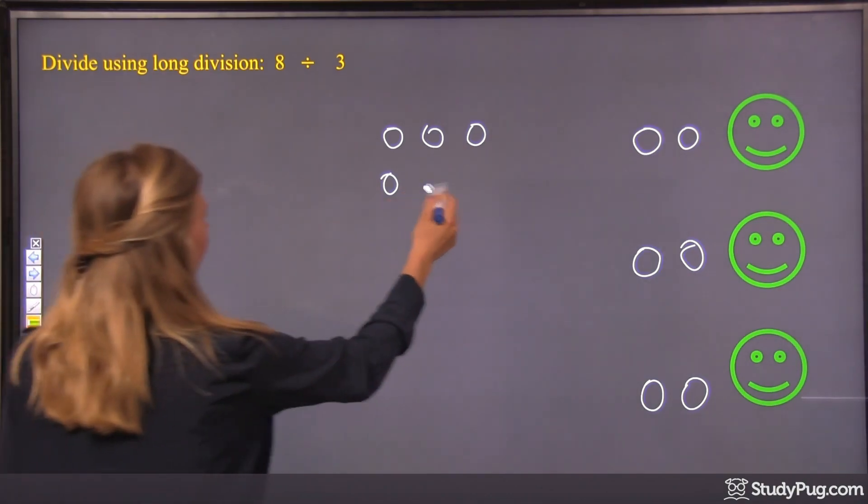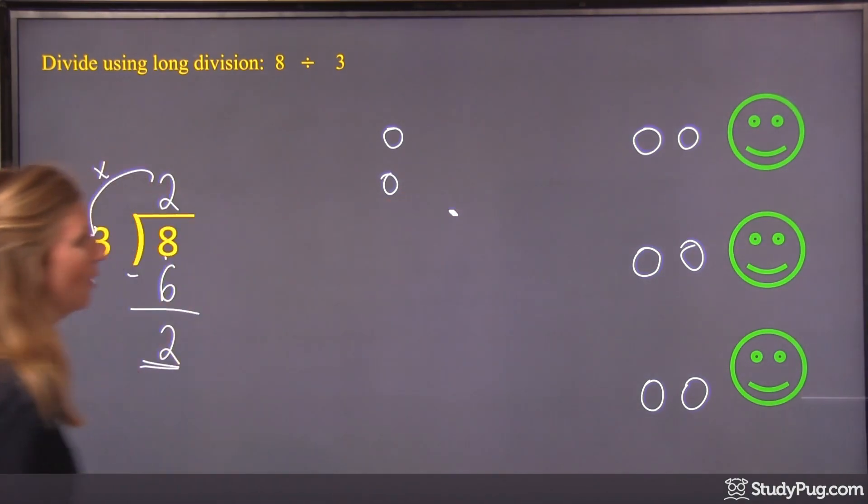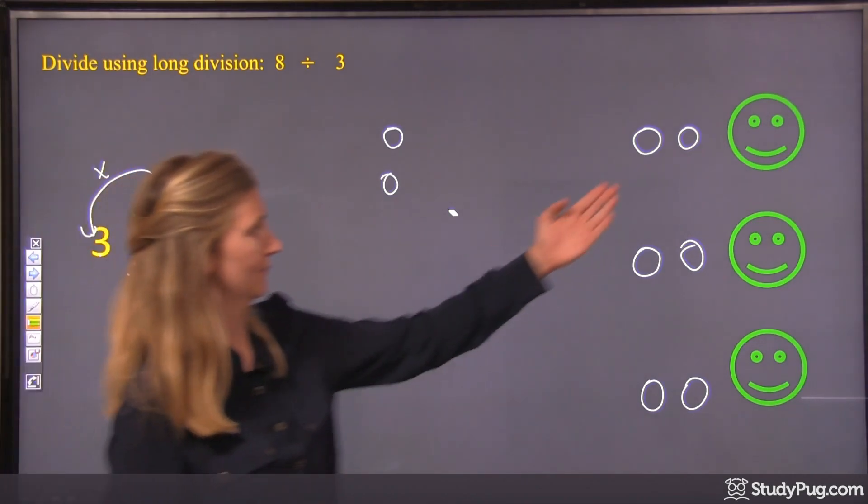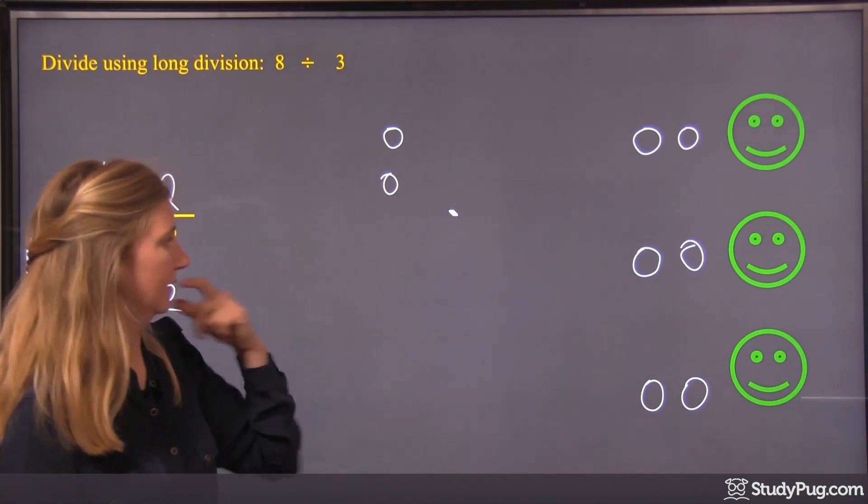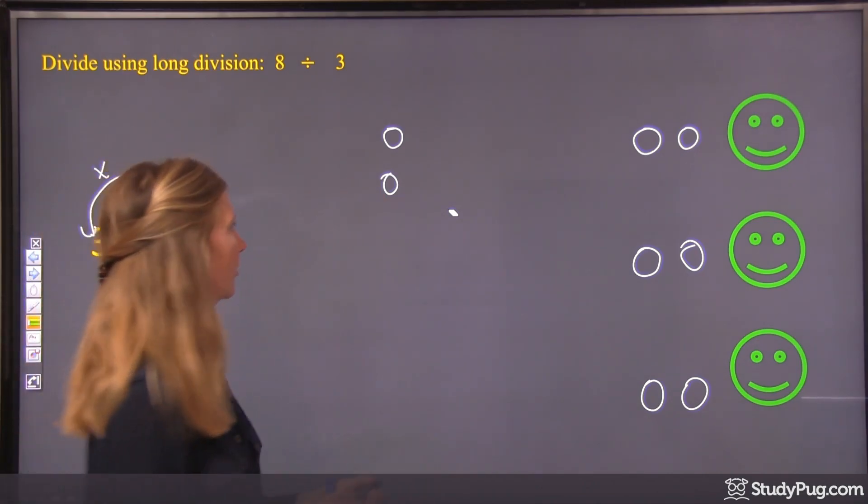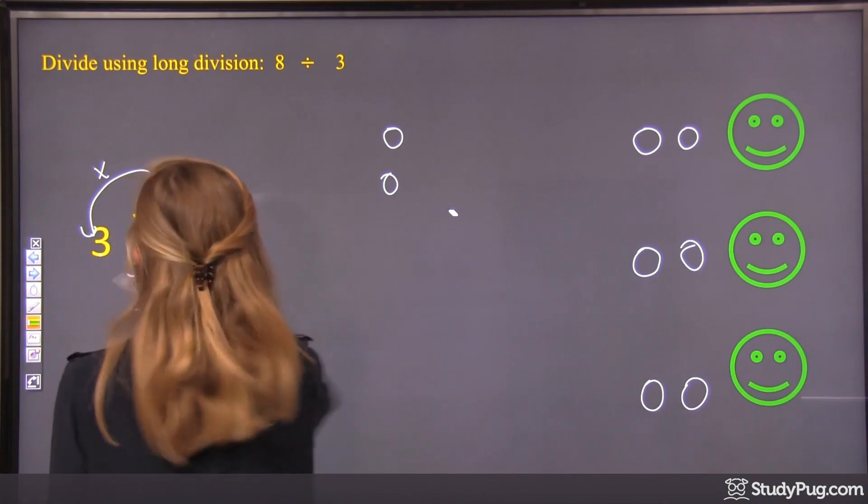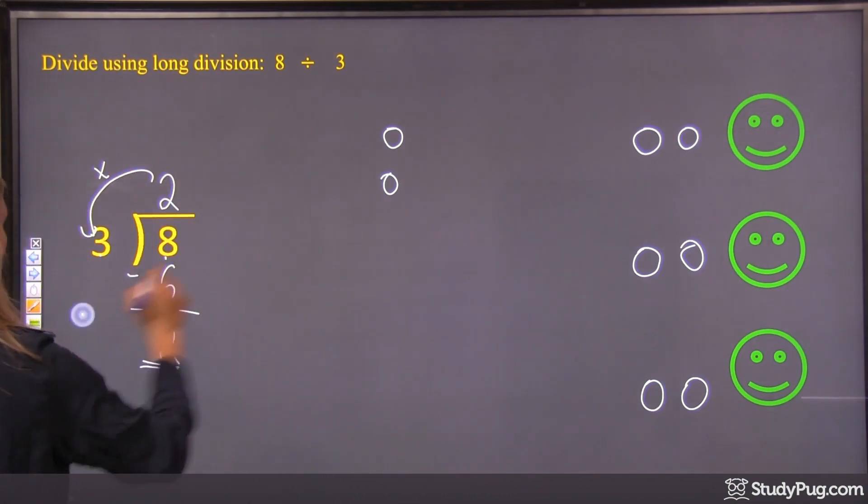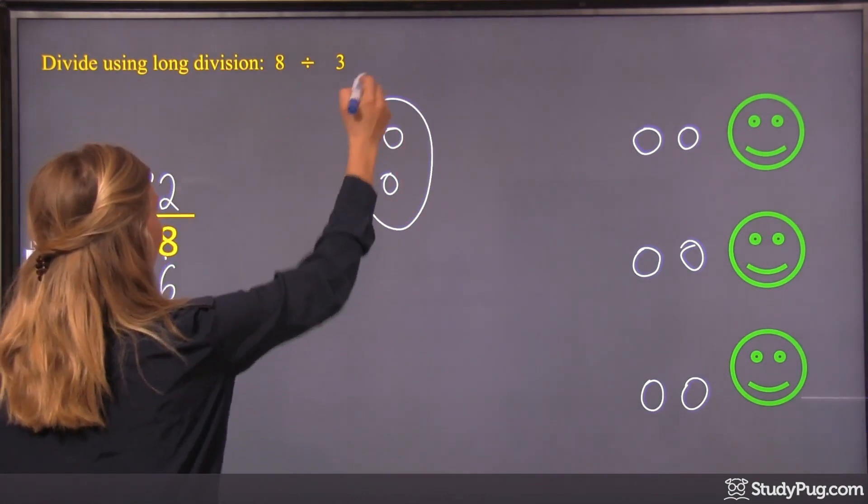So we get rid of 3 here, and now we have 2 left. We have 3 people, right? So we can't give out these evenly. All right, so this right here is what's known as a remainder.